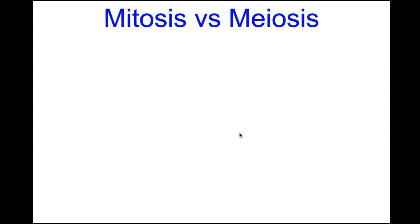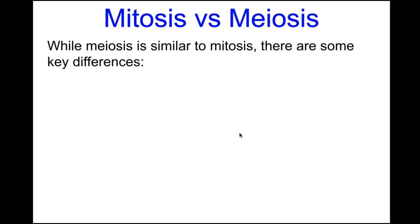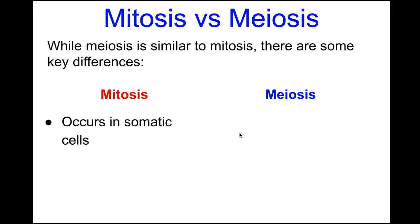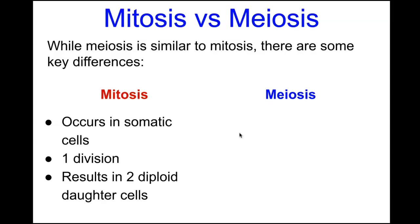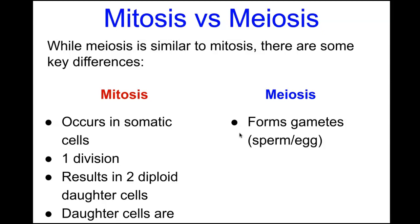Let's quickly revisit mitosis. Mitosis occurs in somatic cells — all the body cells that are not sperm or eggs, such as muscle, nerve, skin, and cardiac cells. Mitosis undergoes one division — the M phase — and results in two diploid daughter cells that are genetically identical to one another.